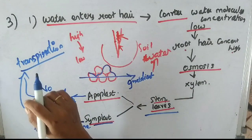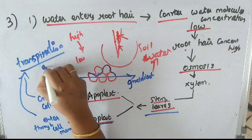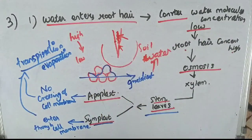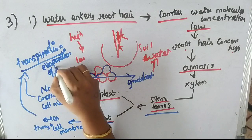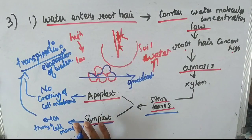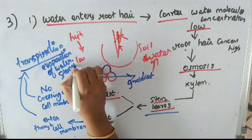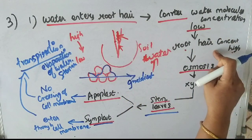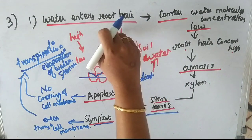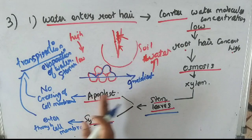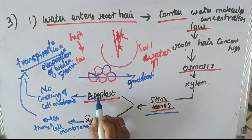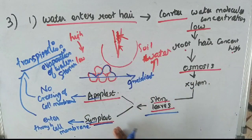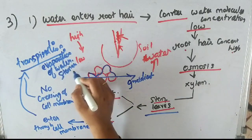The water is going to reach the leaves and be evaporated. When the leaves evaporate, water is transpired by transpiration. Water within the root hair reaches the leaves via two methods: the apoplast and symplast pathways — following the gradient, crossing the membrane, crossing the stem, and reaching the leaf.